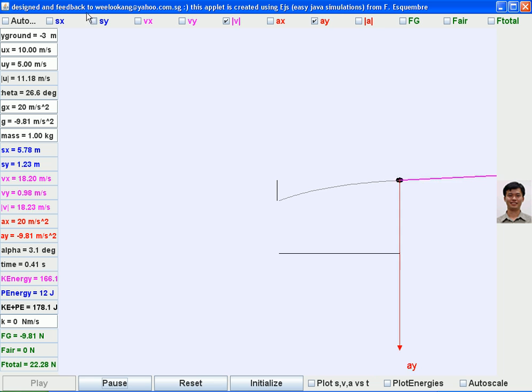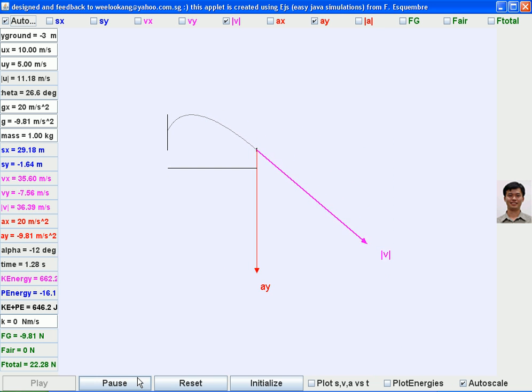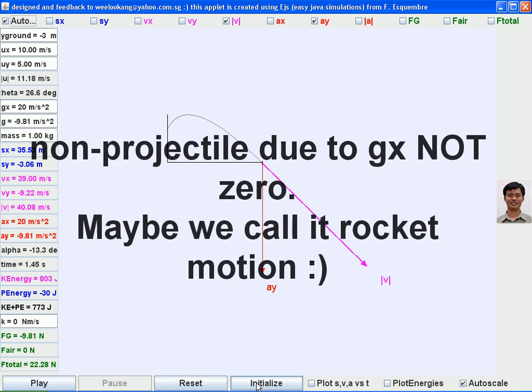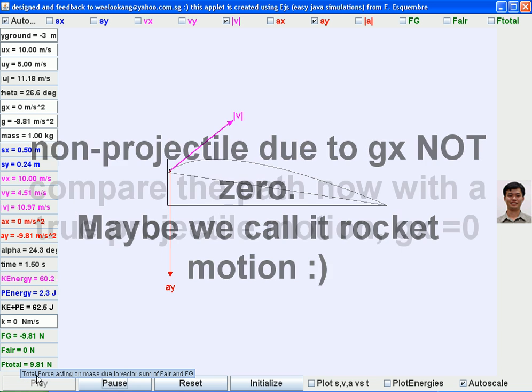Click on the play button. You can see that this motion is not a projectile motion because there is a constant force pushing in the x axis. This is somewhat like a rocket.